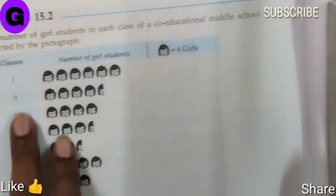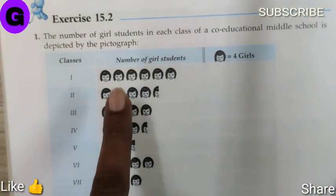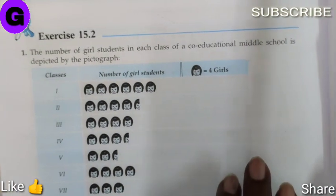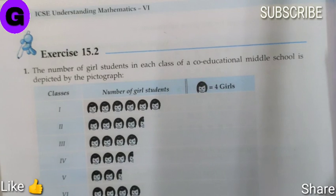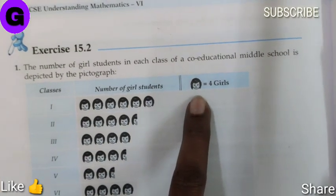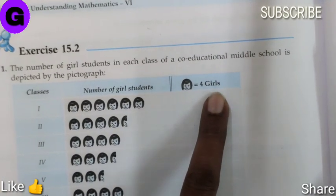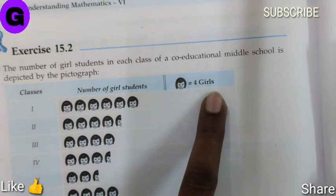Question number 1 says the number of girl students in each class of a co-educational middle school is depicted by a pictograph. The key is given: one face represents 4 girls.